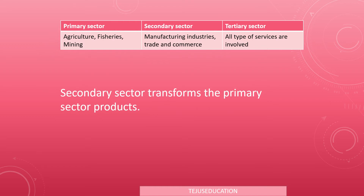Now, a quick revision: the primary sector includes agriculture, fisheries, and mining. The secondary sector is manufacturing industries. The tertiary sector includes trade, commerce, banking, and all types of services. This is a revision we have covered in economics — our main focus here is the manufacturing industry.